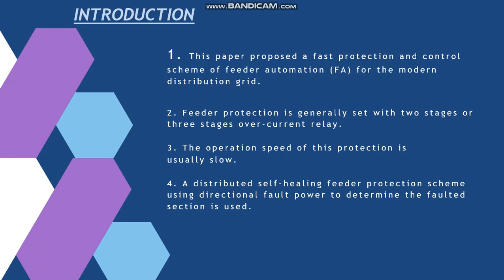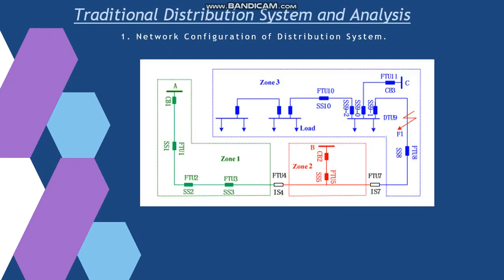Feeder protection are generally two stages and three stages overcurrent relay. Therefore, their operation time is generally slow. In order to fasten up the protection scheme, a distributed self-healing feeder protection scheme due to bidirectional fault power is being used in the fault rate section.